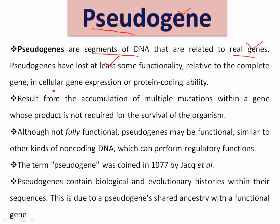Pseudogenes have lost at least some functionality. That's why we call them pseudogenes. They have lost at least some functionality relative to the complete gene, either in cellular gene expression or protein coding ability. Ultimately, the defective copy of a normal gene is called a pseudogene. Pseudogenes arise because they result from the accumulation of multiple mutations within a gene, converting it into a non-functional gene.